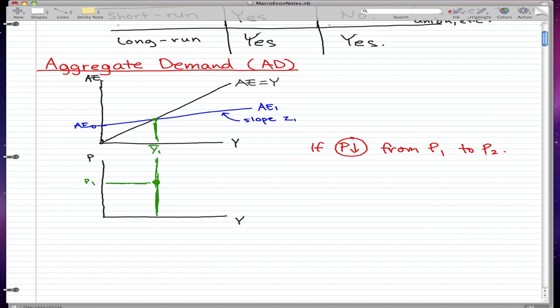Let's have this be Y1 and let's have this be Y2, and let's have this be P2. So if we have a price level that falls from P1 to P2, we'll have something like this.